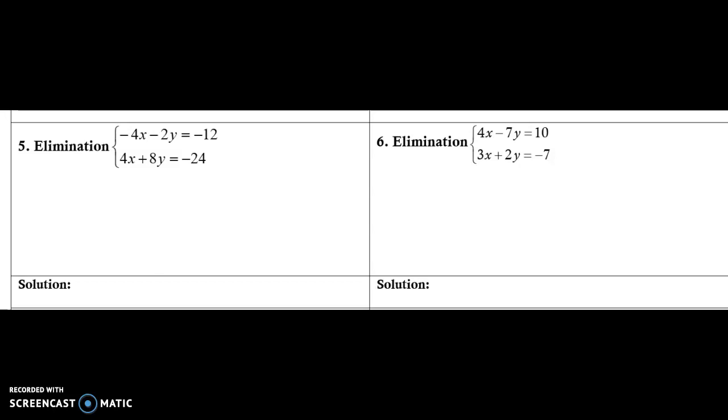Looking at the two equations, I have a negative 4x and a positive 4x, so I can go ahead and eliminate those out by adding. And then I'm going to go ahead and add the y's and the numbers of the two equations.